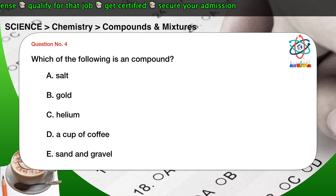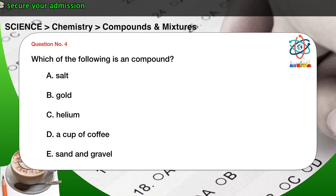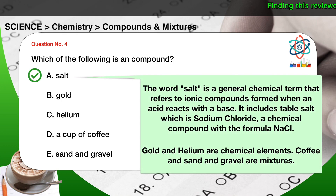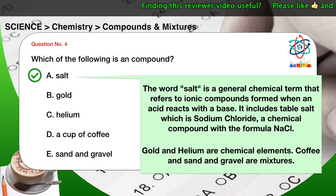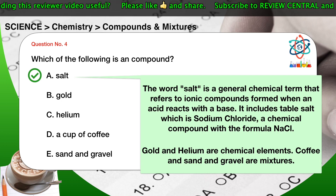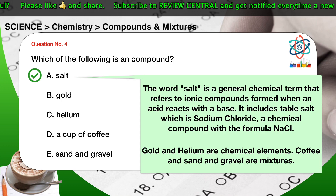Question number four: which of the following is a compound? A) Salt. B) Gold. C) Helium. D) A cup of coffee. E) Sand and gravel. The correct answer is A. Salt is a general chemical term that refers to ionic compounds formed when an acid reacts with a base. It includes table salt, which is sodium chloride, a chemical compound with the formula NaCl. Gold and helium are chemical elements; coffee and sand and gravel are mixtures.